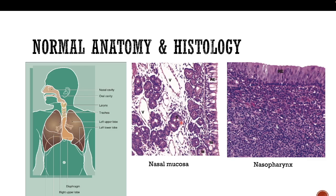When we take a biopsy of a normal person's nasal cavity, this is the tissue you usually see. The nasal cavity is usually lined by respiratory tract epithelium — it is a columnar epithelium with cilia. This is what differentiates this epithelium from other columnar epithelia such as the gastrointestinal tract epithelium. Beneath the respiratory type epithelium you have mucus glands.